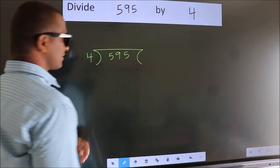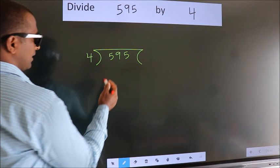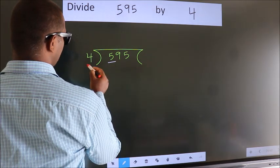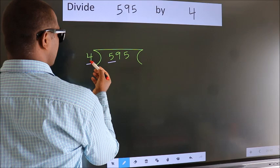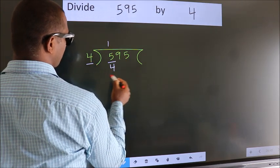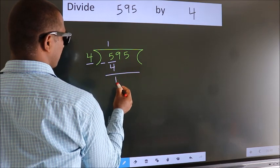This is your step 1. Next, here we have 5, here 4. A number close to 5 in the 4 table is 4 once 4. Now we should subtract. We get 1.